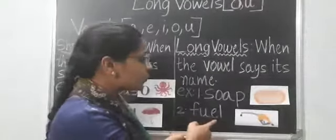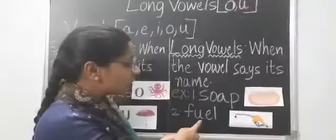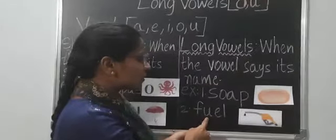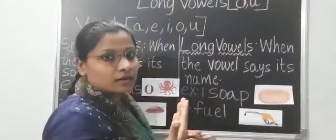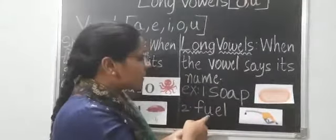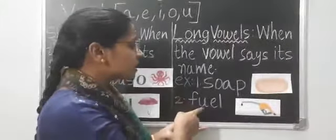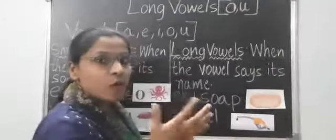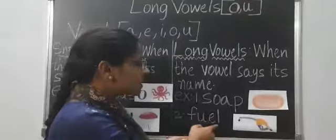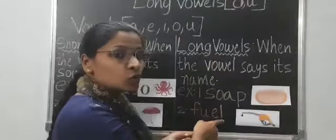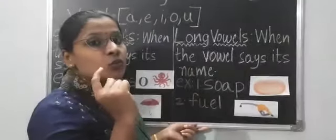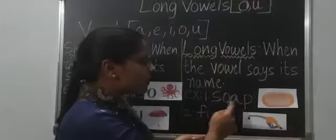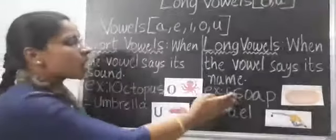Next — fuel. When you are saying fuel, can you observe how many vowels we have? Two vowels: U, E. Can you see children? U is speaking. When you hear the word fuel, U is speaking — we are hearing the name of a letter. And E is silent, means there is no sound of E. So it is a long vowel. Fuel — you can hear the name of U. U is coming here.